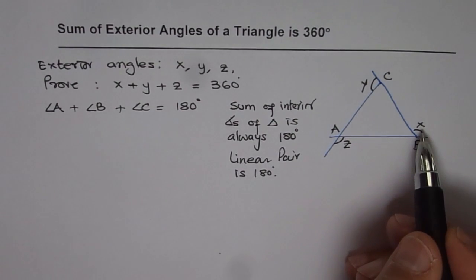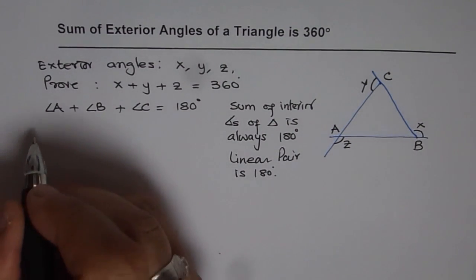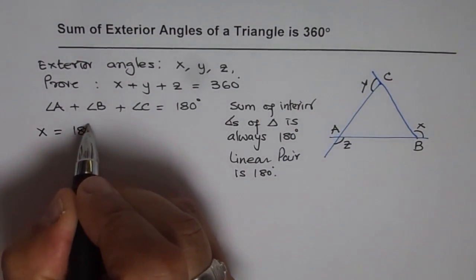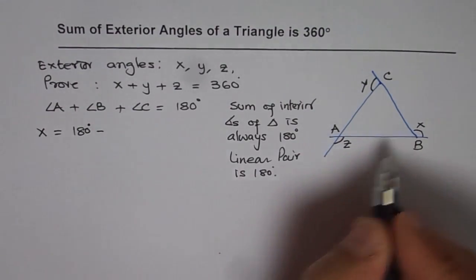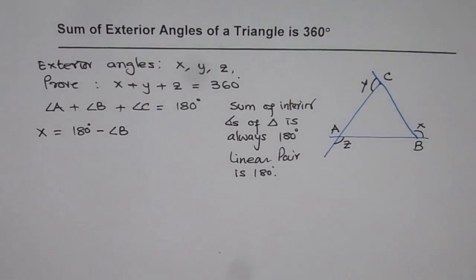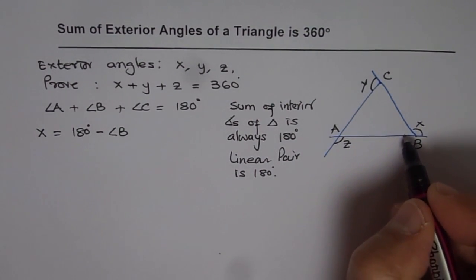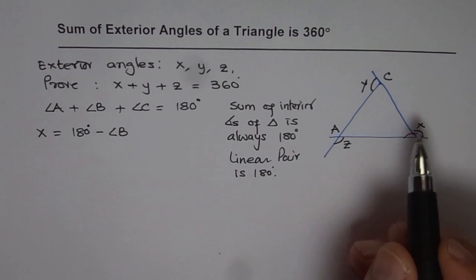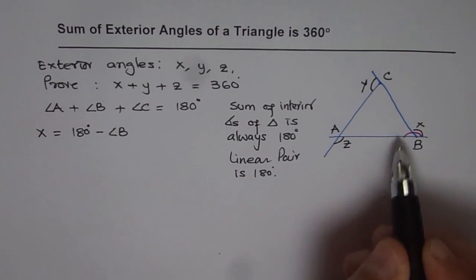So let's begin with angle x. Now what is this angle x equal to? So x is equal to 180 degrees minus angle B. Since this line, angle B plus angle x forms a linear pair, right? So angle x is 180 degrees minus angle B.